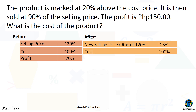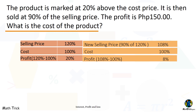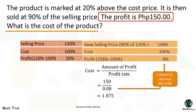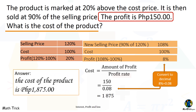The cost is 100%, so the profit is 8%. To find the cost of the product, divide the amount of profit by the profit rate: 150 divided by 0.08. The cost is 1,875. The cost of the product is 1,875 pesos.